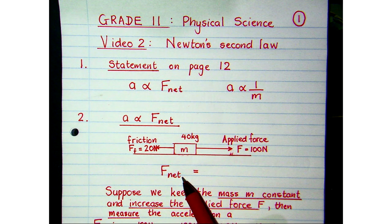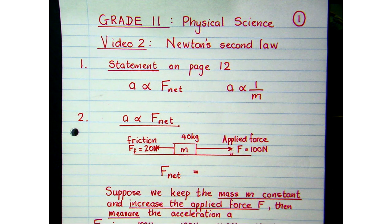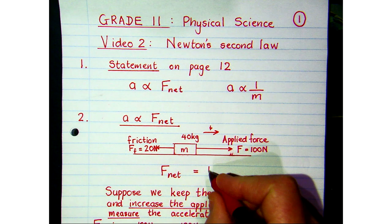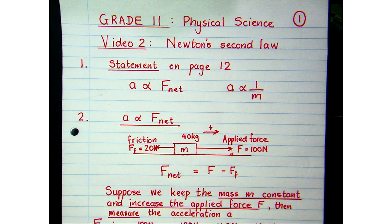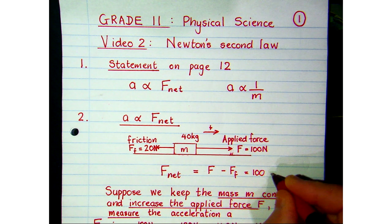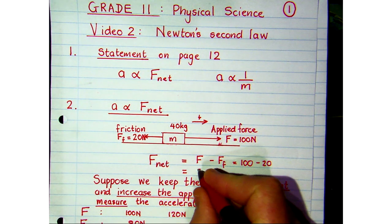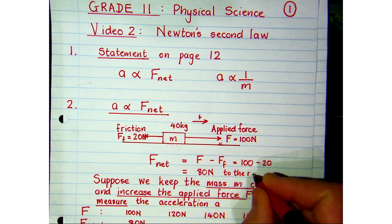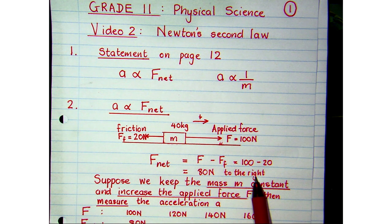The resultant force is the vector sum of all forces acting on the object. Taking to the right as positive, the net force is the forward force minus the frictional force: 100 minus 20, giving a net force of 80 newtons to the right. We know the direction of the net force, so the direction of the acceleration must also be to the right.